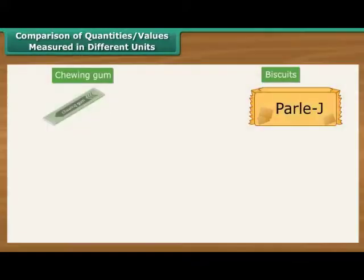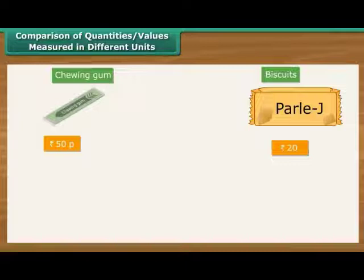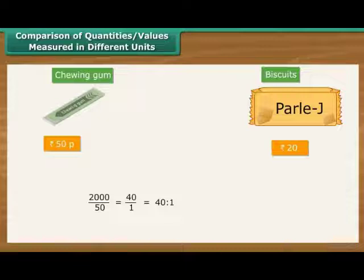Hari has bought a chewing gum for Rs. 50. His friend Shiv has bought a packet of biscuits for Rs. 20. Who spent more money and by how many times? Before comparing, we express Rs. 20 as 2000 paise. Now we can work out the ratio. 2000 by 50 is 40 by 1, which is equal to 40 is to 1. We can therefore say that Shiv has spent 40 times more money than Hari.